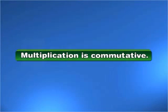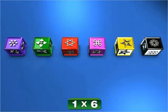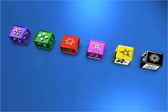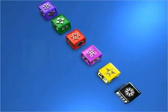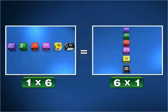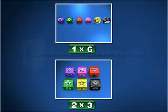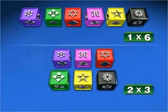Since multiplication is commutative, one multiplied by six and six multiplied by one represent the same rectangular arrangement. Thus, the four arrangements actually represent only two different rectangular arrangements.